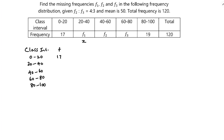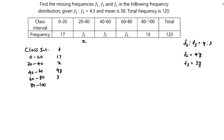Since f2 is to f3 equals 4 is to 3, I'll consider f2 as 4y and f3 as 3y. So f1 is x, f2 is 4y, and f3 is 3y. The last frequency is 19.